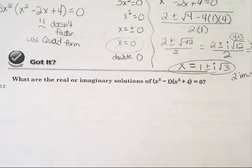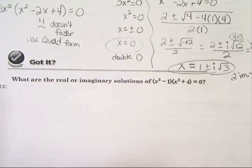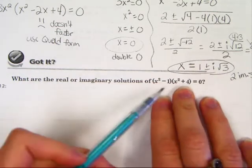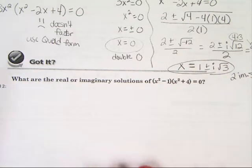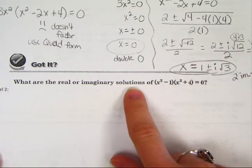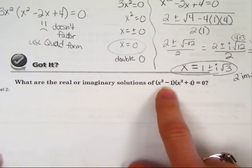In the guide at number 1, it asks us again for the real or the imaginary solutions, and they give us two binomials here. We know that each binomial, in order to be what we call a solution, the binomial has to equal 0.